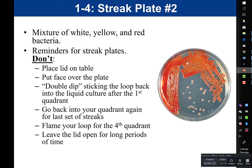Don't go back into your earlier quadrants when doing the last set of streaks. For quadrant four, make sure you don't accidentally hit quadrant one or two — only pull from quadrant three. Touching quadrant one would pull all that bacteria back out. And don't flame your loop between quadrant three and four — if you do, you won't have enough bacteria and won't get isolation.